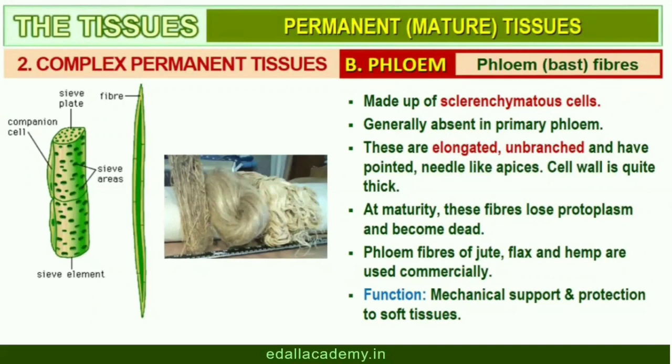The first formed primary phloem consists of narrow sieve tubes and is referred to as protophloem, and the later formed phloem has bigger sieve tubes and is referred to as metaphloem.